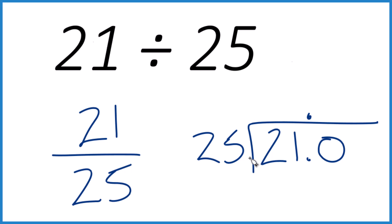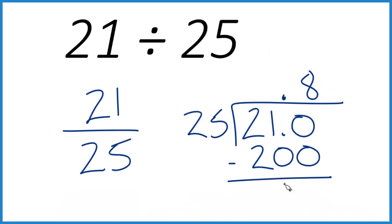So now 4 times 25 is 100. 8 times 25, that would be 200. So pretty close. Subtract, we get 10.